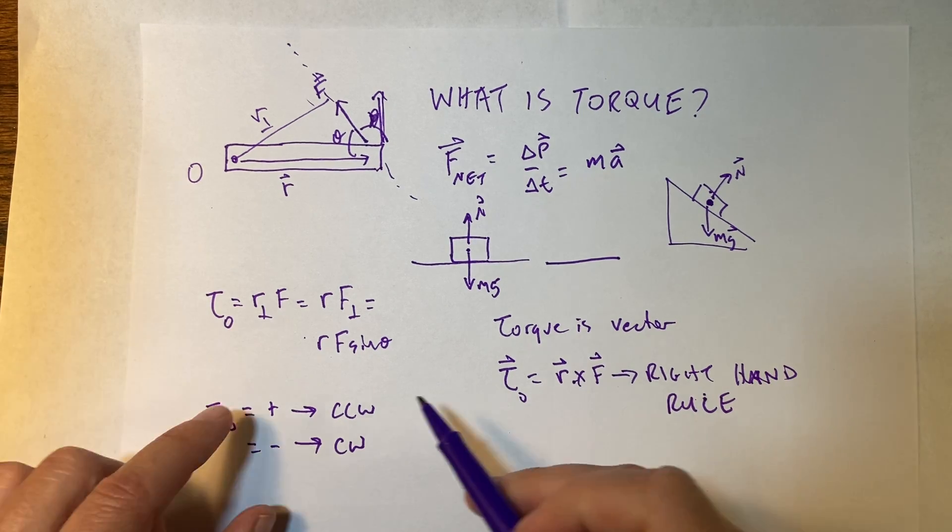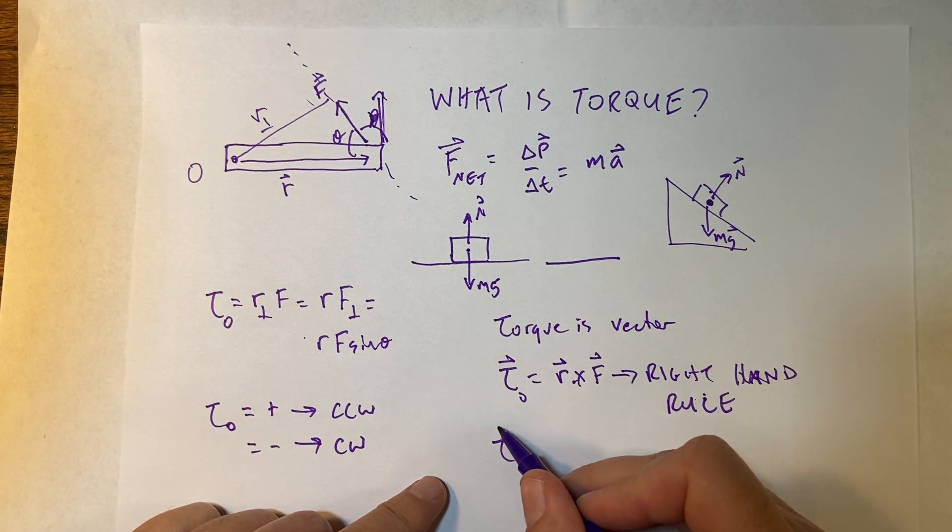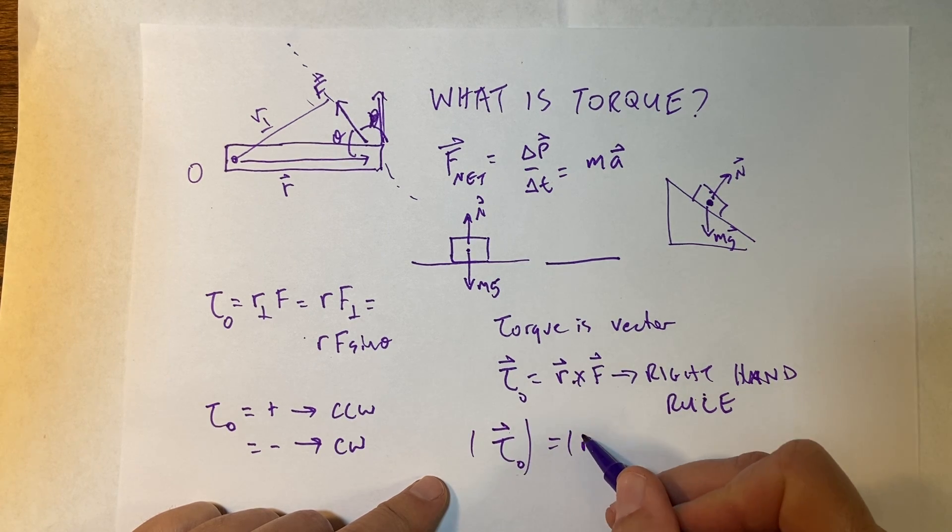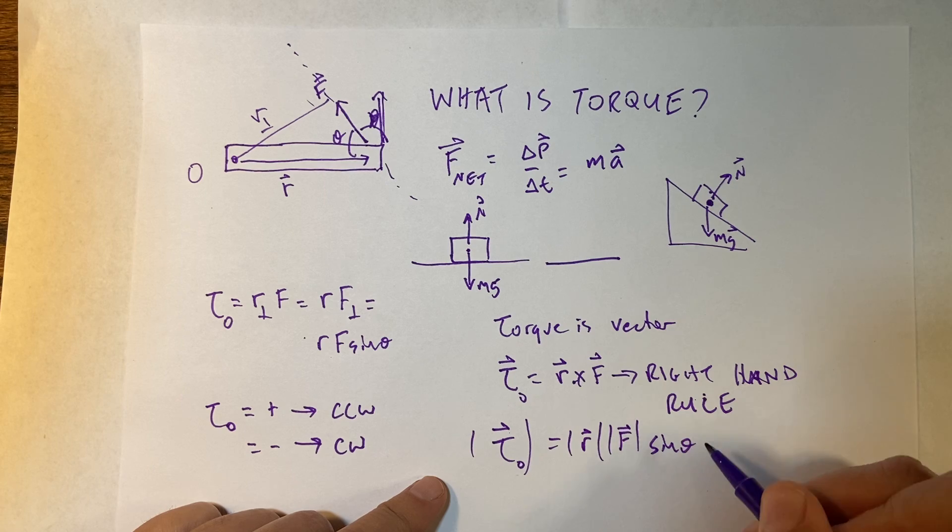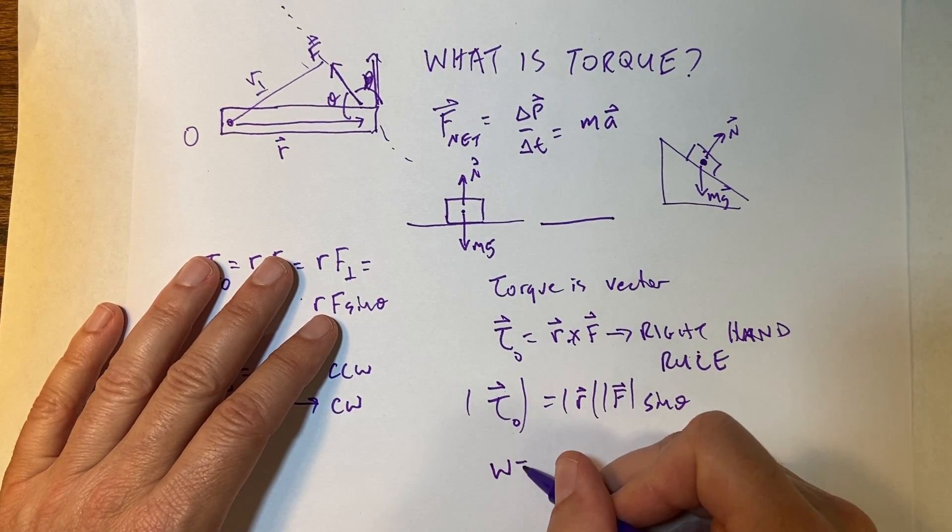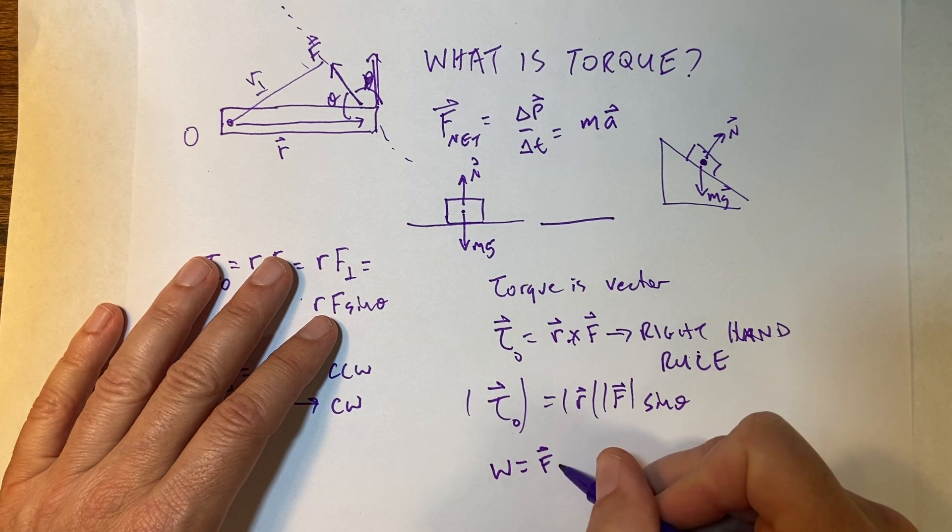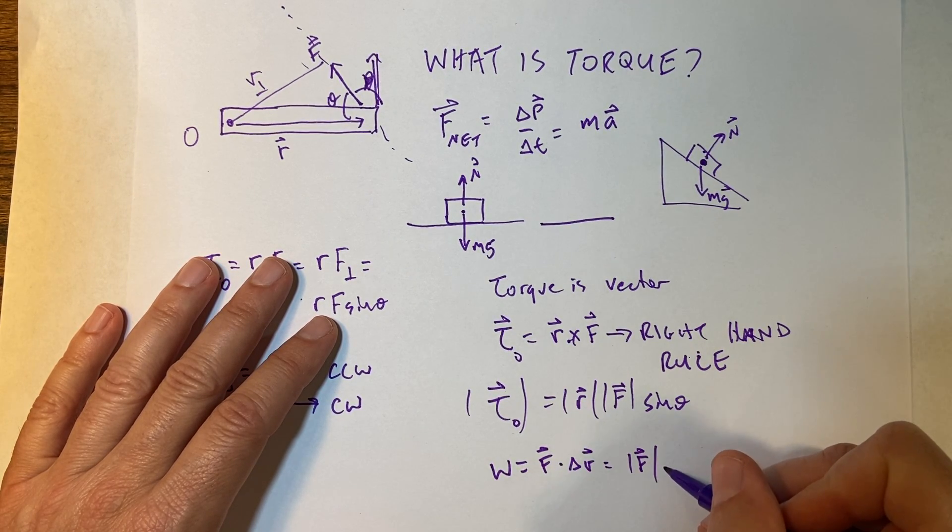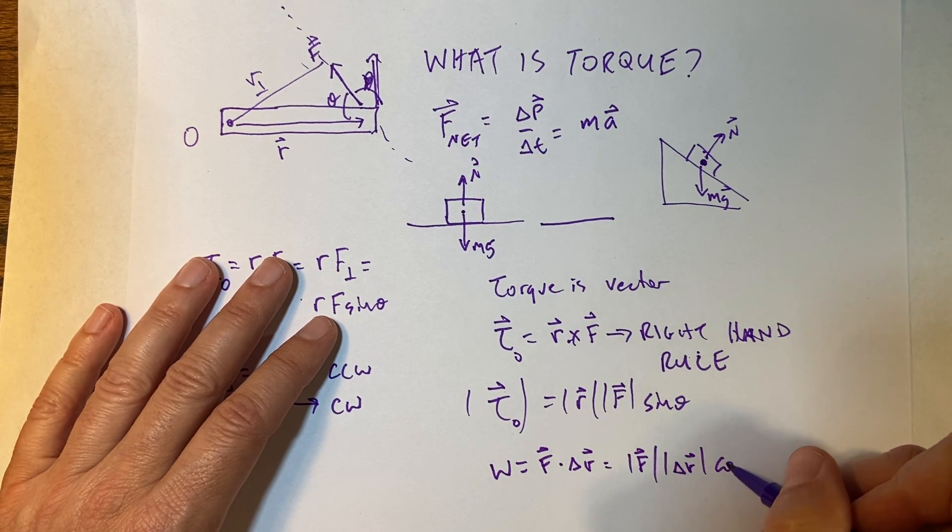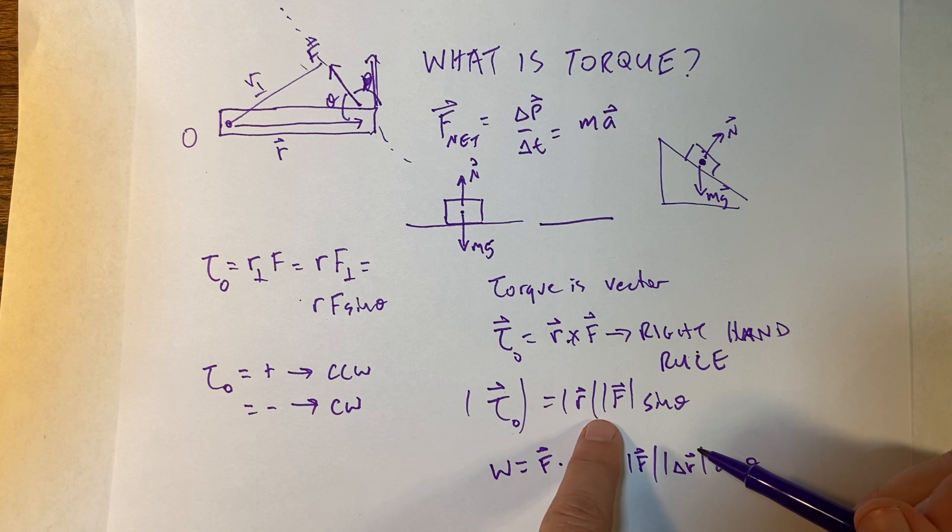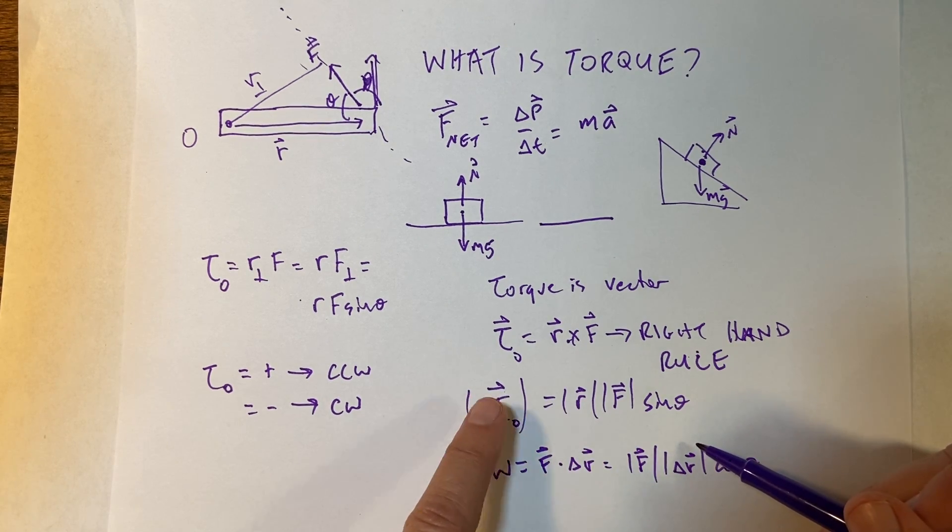But what is torque? That's how you count. So, and I can also calculate it this way. The magnitude of a cross product is equal to the magnitude of R times the magnitude of F times the sine of the angle between them. And remember this is similar to the dot product, where I said the work is F dot delta R, which is the magnitude of F times the magnitude of delta R times the cosine of the angle between the two vectors. But this gives me a scalar value. This gives me a vector value. So, I need to take the magnitude of it.